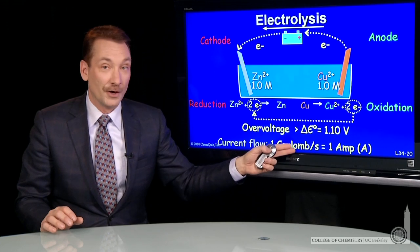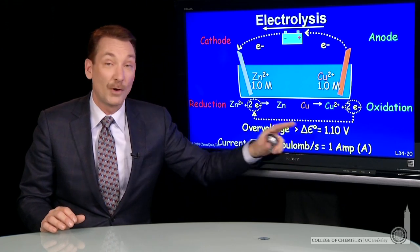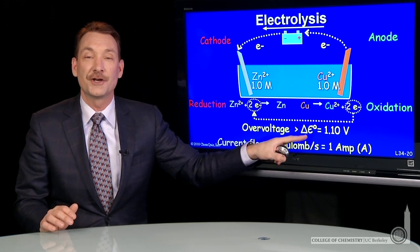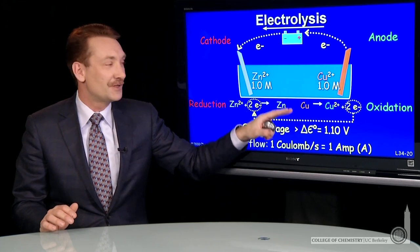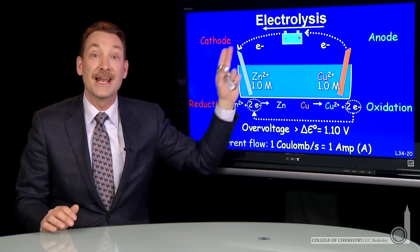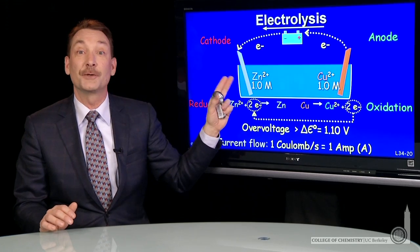The current flow, when that occurs, is measured in amps. An amp, 1 ampere (symbol A), is 1 coulomb of charge per second. The current flow can be measured in amps in an electrolytic cell that forces a galvanic cell to go in reverse.